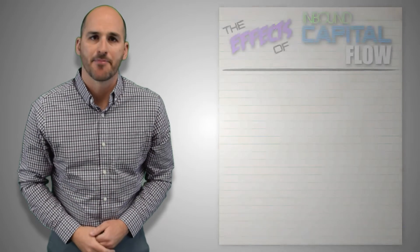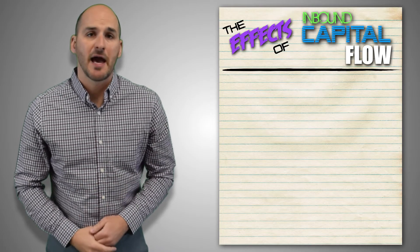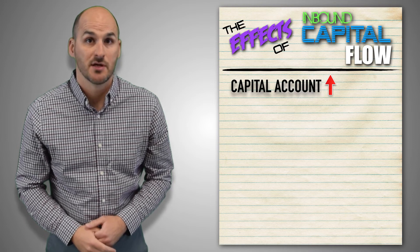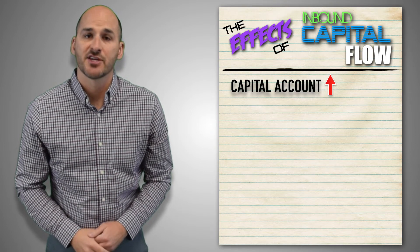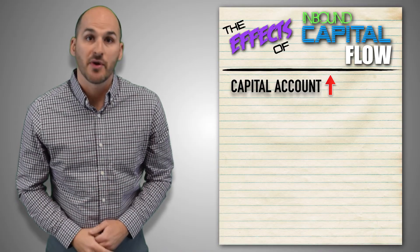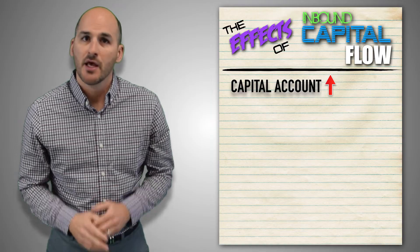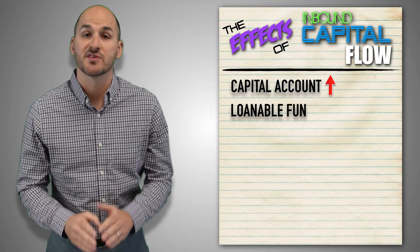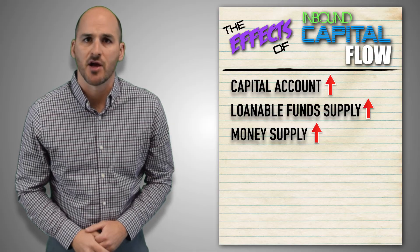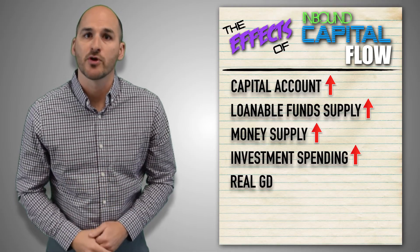So how does inbound capital flow impact an aggregate economy? First, inbound capital flow will cause a country's capital account to move towards a surplus. Capital flow is connected to financial investments in the capital account, and so capital inflow counts as a positive in a nation's capital account balance. Inbound capital flow also increases the volume of loanable funds available and the supply of money in the domestic economy.